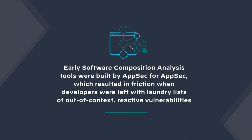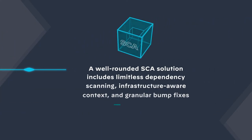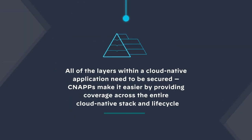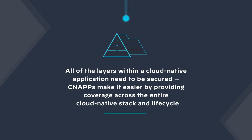Let's recap what we've covered in this episode. Early software composition analysis tools were built by AppSec for AppSec, which resulted in friction when developers were left with a laundry list of out-of-context, reactive vulnerabilities. Modern SCA takes a developer-first approach. In addition to being developer-friendly, a well-rounded SCA solution includes limitless dependency scanning, infrastructure-aware context, and granular bump fixes. However, SCA is just one component of a well-rounded cloud-native application security program. From IaC security to API protection, all of the layers within the cloud-native application need to be secured, and CNAP makes it easier to provide coverage across the entire cloud-native stack and lifecycle.